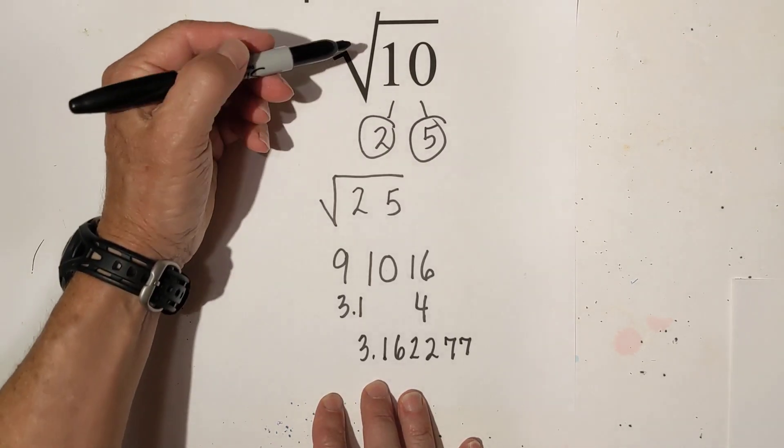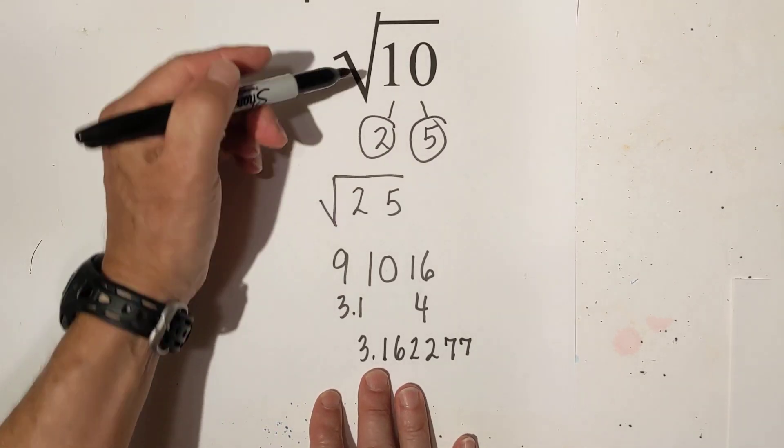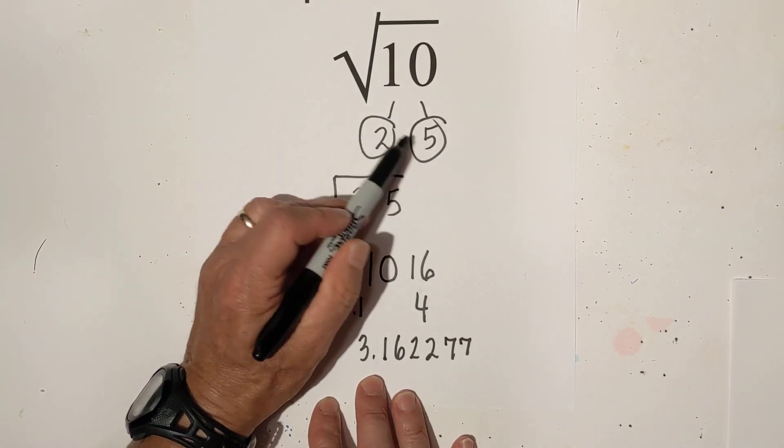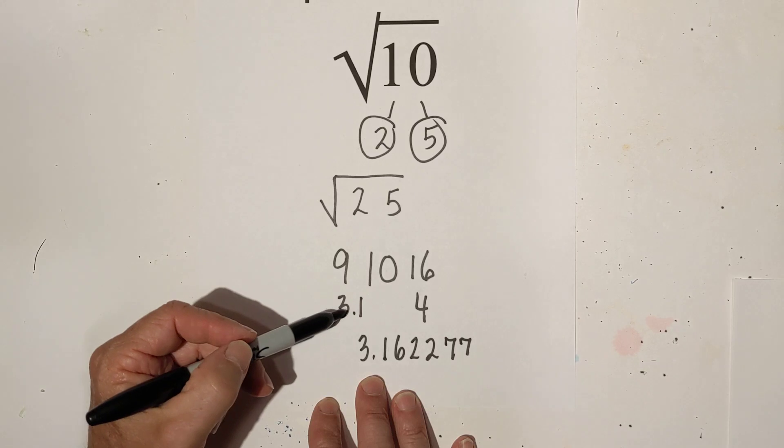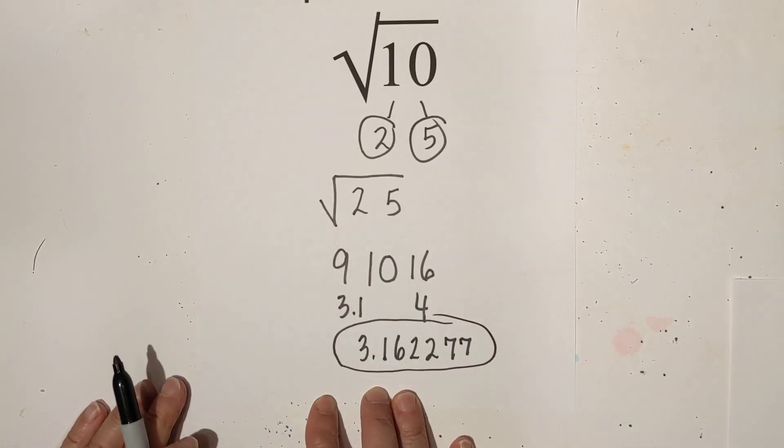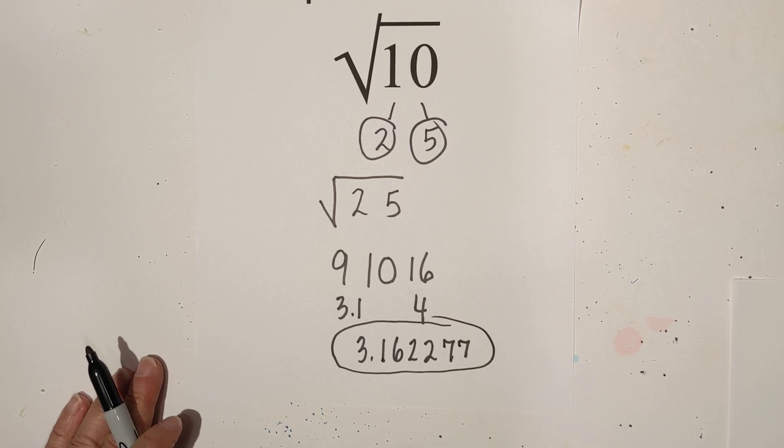So in summary, square root of 10 is simplified as the square root of 10 because you can't pull two numbers out. If you want to estimate it, it is 3.1 and then here it is if you put it in the calculator. Thanks for watching and remember,